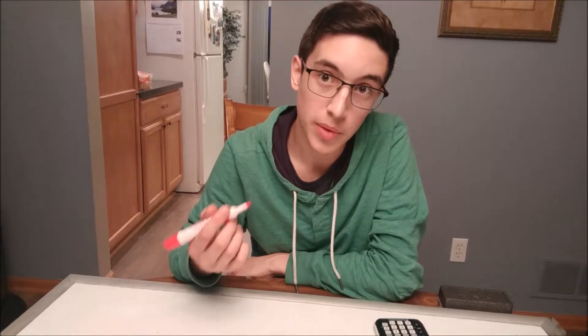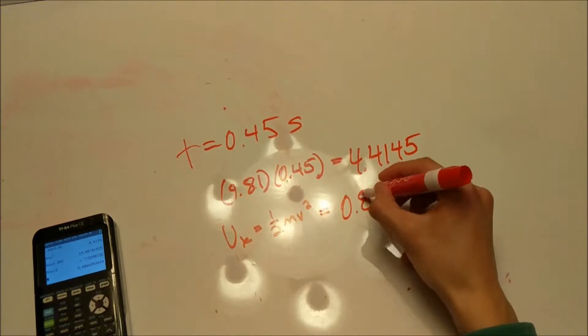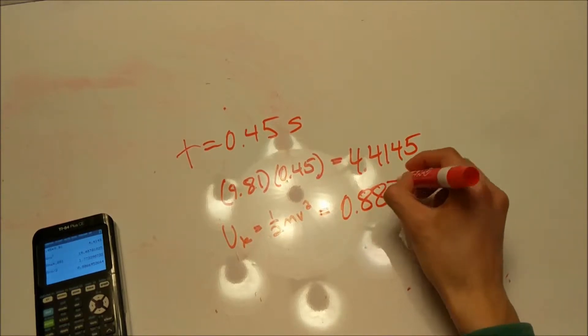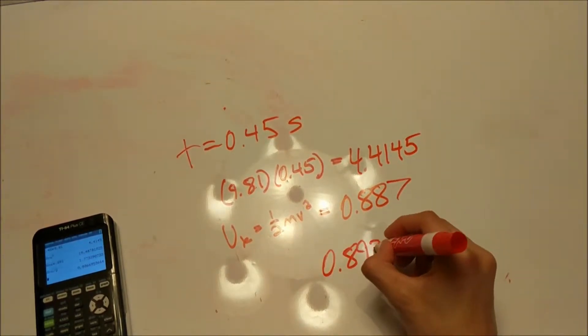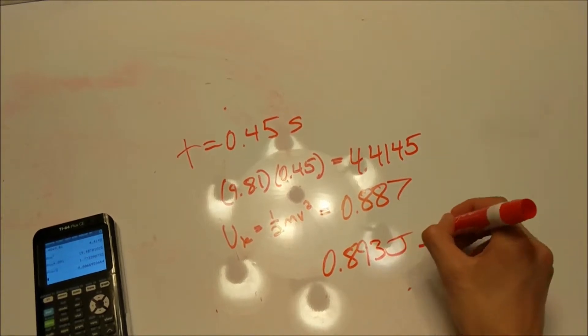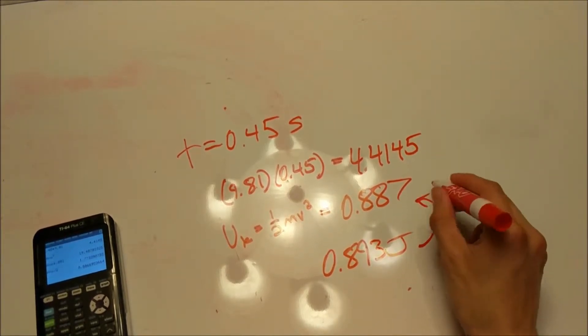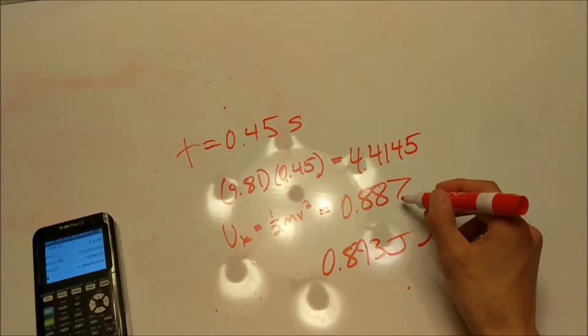Now using the formula to find kinetic energy, you can see the ball's potential energy — 0.893 joules — is just about equal to its kinetic energy right after the fall. And that's the law of conservation of energy in action.